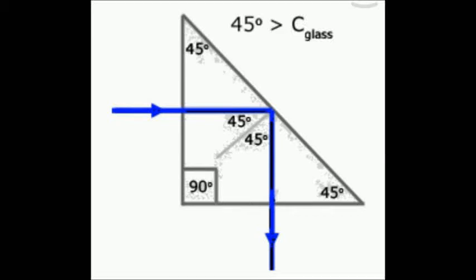This right angle isosceles prism that you are seeing in the picture is called a total reflecting prism. Although there can be other kinds of prism where total internal reflection takes place, this right angle isosceles prism specifically is called a total reflecting prism.